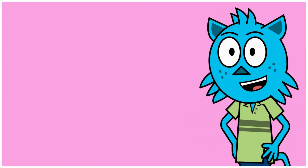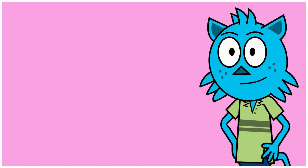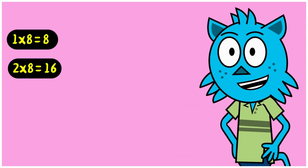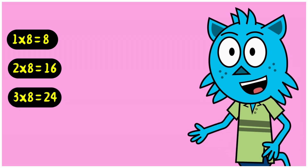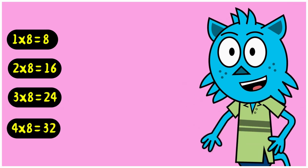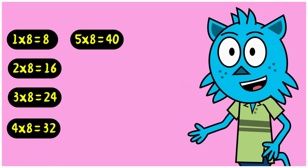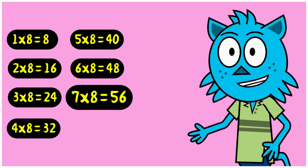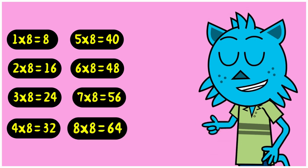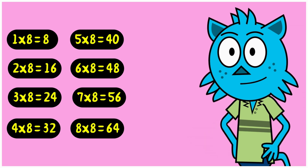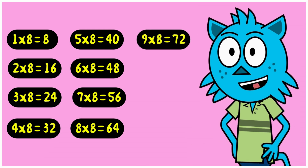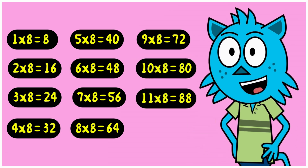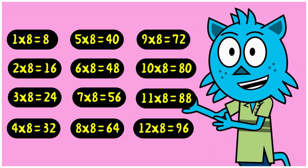Now let's go through the eight times table one last time. One times eight is eight. Two times eight is sixteen. Three times eight is twenty-four. Four times eight is thirty-two. Five times eight is forty. Six times eight is forty-eight. Seven times eight is fifty-six. Eight times eight is sixty-four. Nine times eight is seventy-two. Ten times eight is eighty. Eleven times eight is eighty-eight. Twelve times eight is ninety-six.